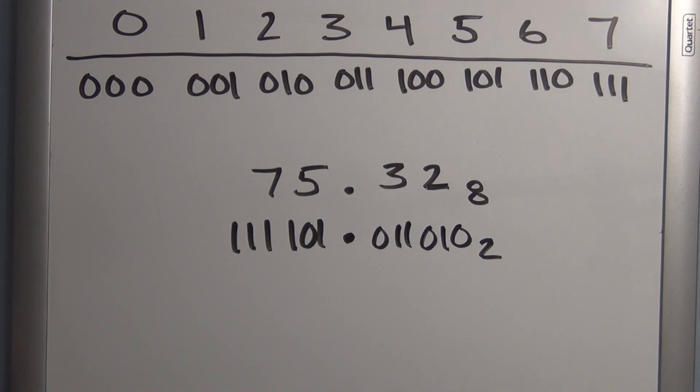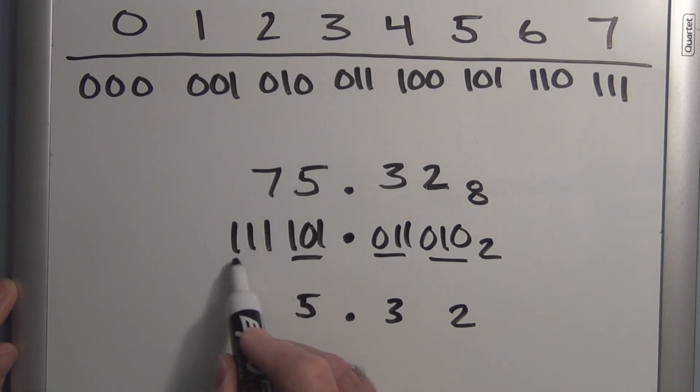And if we want to go back to octal, you just do the same thing. You take groups of 3 and convert them back to their octal equivalent. So again, this group of 3, we've got 2, 3, 0.57.